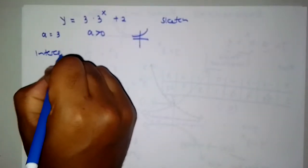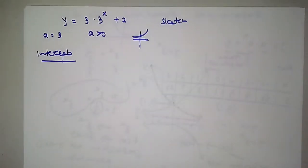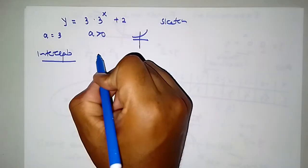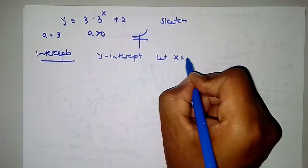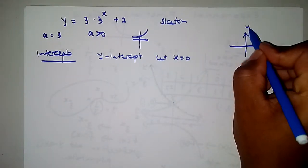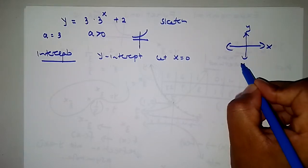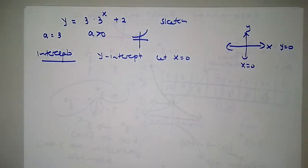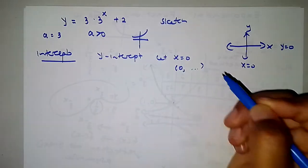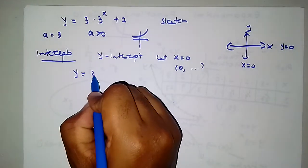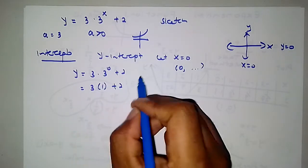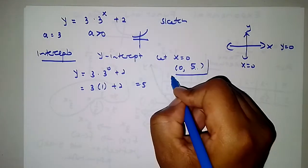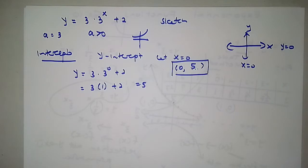Let us look now at the intercepts of this particular graph. For the y-intercept, you let x equals to 0. The reason you do that is because the equation of the y-axis is x equals to 0, and the equation of the x-axis is y equals to 0. So when finding the y-intercept, you let x equals to 0: y is equal to 3 multiplied by 3 to the 0 plus 2, which gives 3 times 1 plus 2, so 3 plus 2 equals 5. The y-intercept coordinate is (0, 5).